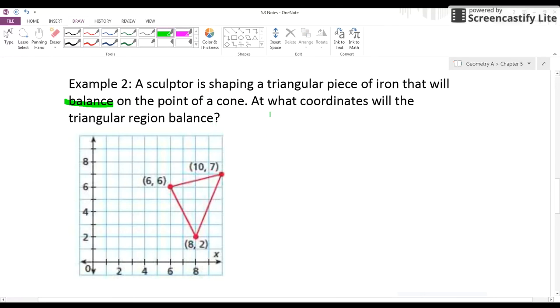We've got a triangular piece that's going to balance. Those are two things we want to look at together. What coordinate will the triangular region balance? If I imagine making a cone, balancing a triangle on top of it, where would I put it on the coordinate plane, the point of the cone? If we're looking for where the triangle is going to balance, this is a key phrase telling us, let's find the centroid.